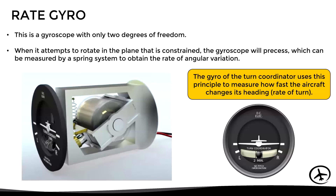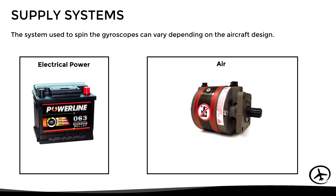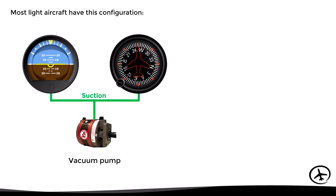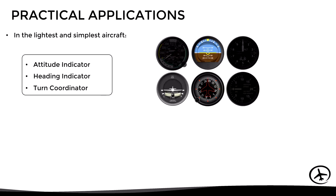In upcoming videos we will look in more detail at the principle of operation of the gyroscope of each instrument. Now let's look at the different systems used to spin the instrument gyros. In aviation, gyros can be driven by electricity or by air. In the electrical system, direct current is most common. In the air system, either vacuum suction or positive air pressure can be used. Normally, in most light aircraft, the attitude indicator and heading indicator are driven by an air vacuum pump, while the turn coordinator is driven by the aircraft's electrical system. This design ensures that a failure in one system does not affect all gyro instruments.